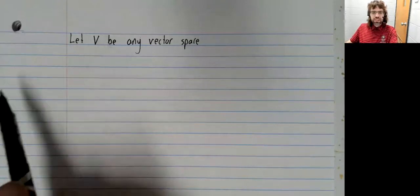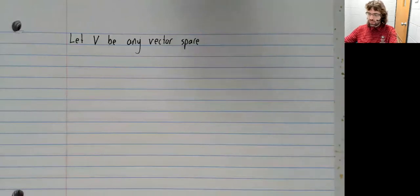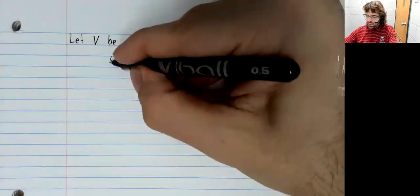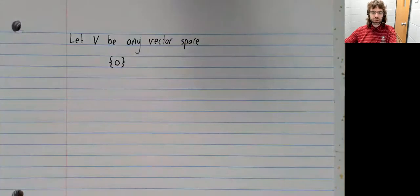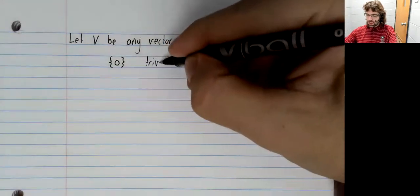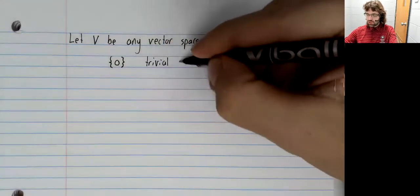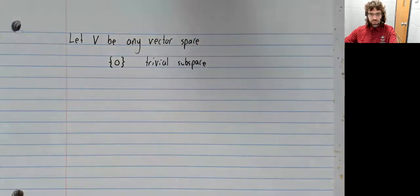Suppose that V is any vector space. To be a vector space, V contains a zero vector. And the set containing the zero vector and only the zero vector is the trivial subspace.